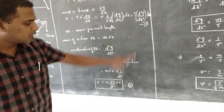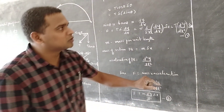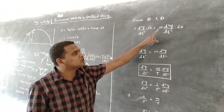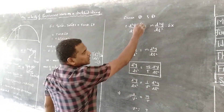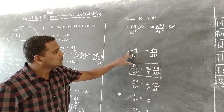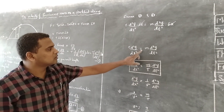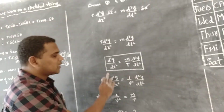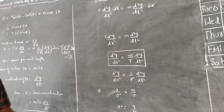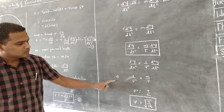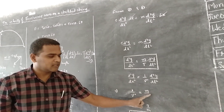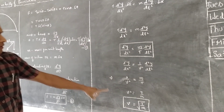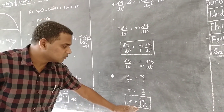Now equating Equation 1 and Equation 2, since both represent the net force acting on section PQ: T · (d²y/dx²) · Δx = m · (d²y/dt²) · Δx. The Δx cancels, giving T · (d²y/dx²) = m · (d²y/dt²). Comparing this with the standard differential wave equation, we equate 1/v² = m/T, which implies v² = T/m. Therefore, the velocity of transverse waves on a stretched string is v = √(T/m). This is the expression we set out to derive.